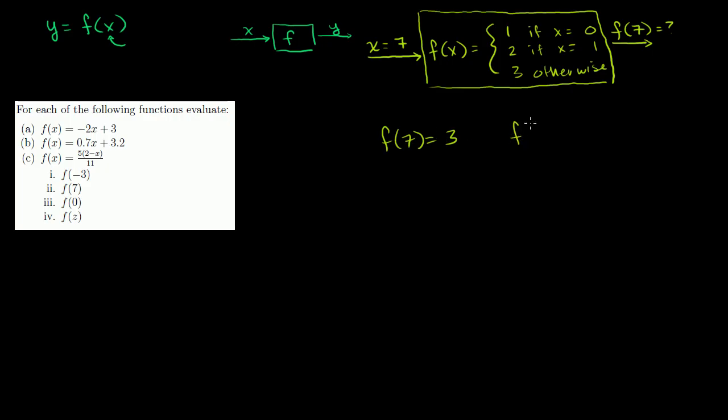What is f of 2? Well, that means instead of x equal to 7, I'm going to give it an x equal to 2. Then the little computer inside the function is going to say, okay, let's see, when x is equal to 2, I'm still in the otherwise situation. x isn't 0 or 1. So once again, f of x is equal to 3. So f of 2 is also equal to 3.